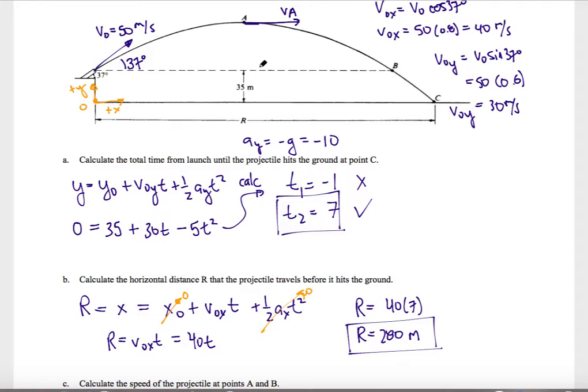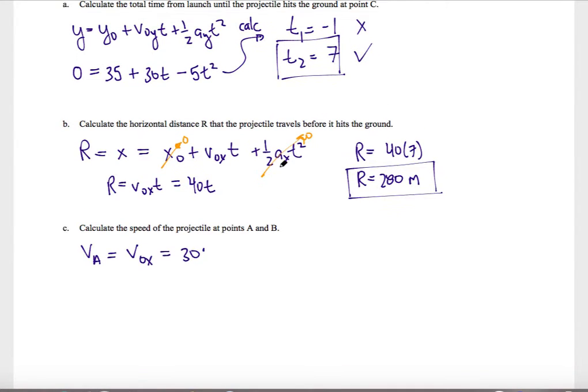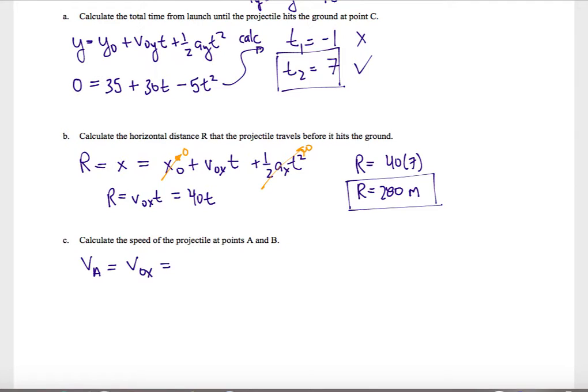So knowing at the peak of my trajectory that I have completely horizontal motion, at the peak there's no y velocity, I know that vA must be equal to my x velocity, which is just 40 meters per second. There is no vertical component at the peak or at maximum height.